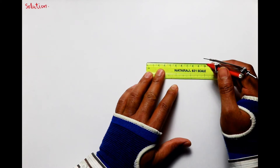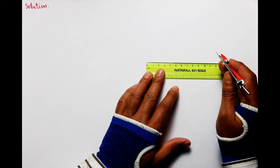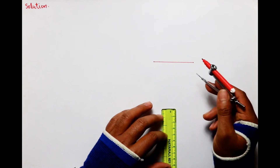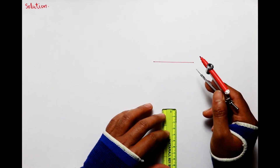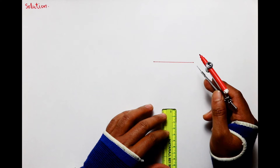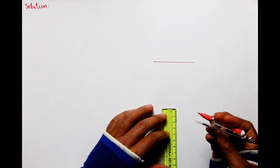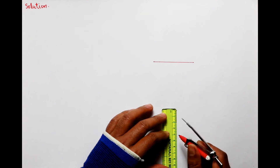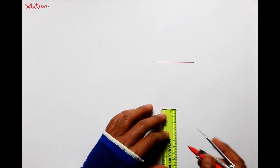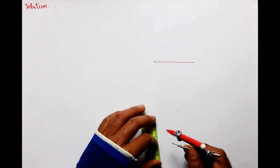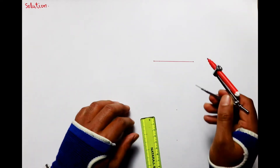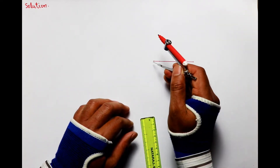तो सबसे पहले बच्चों हम draw कर लेते हैं 7 cm। अब इसके बाद बच्चों दो sides और इस triangle की draw करनी हैं — 5 cm और 6 cm। तो अब बच्चों हम 5 cm का arc लगाएंगे, तो सबसे पहले compass में हम भर लेते हैं 5 cm।